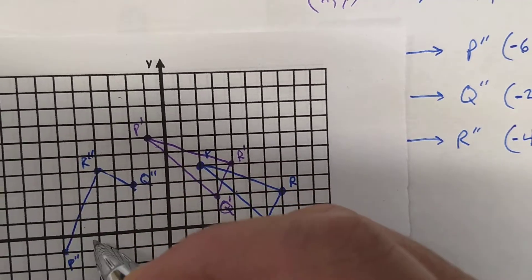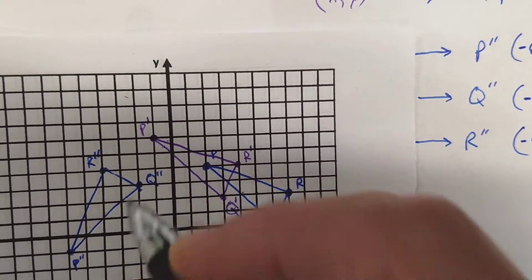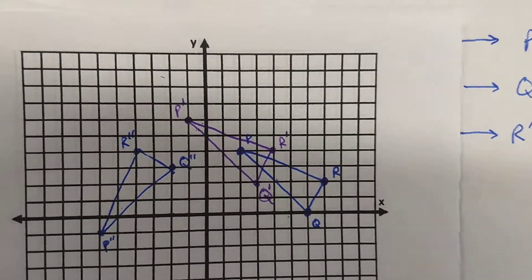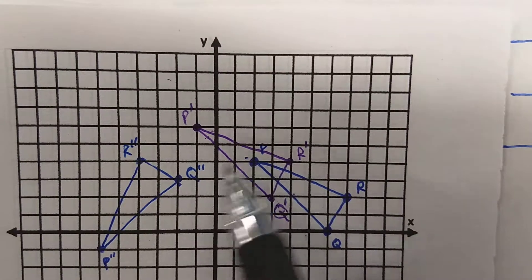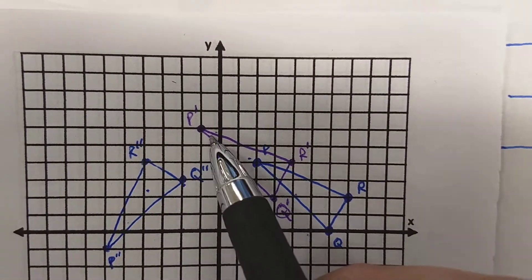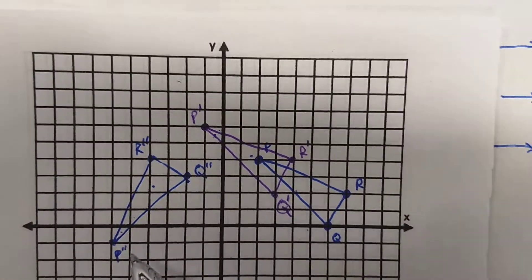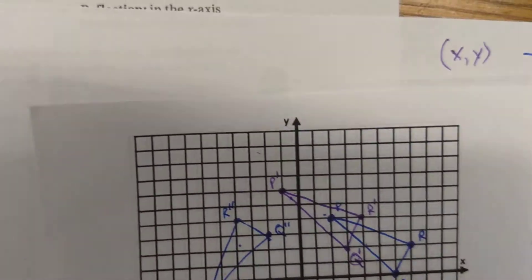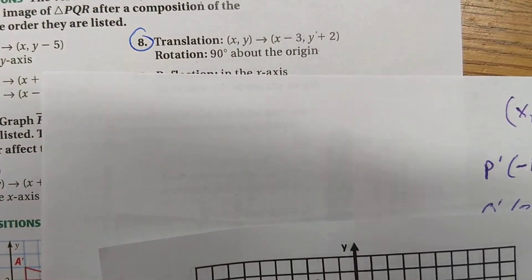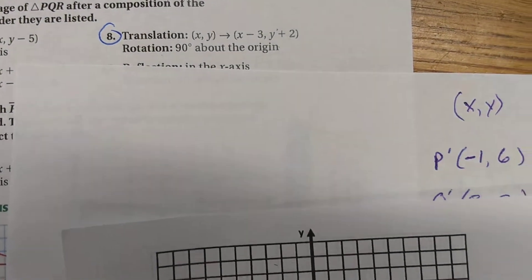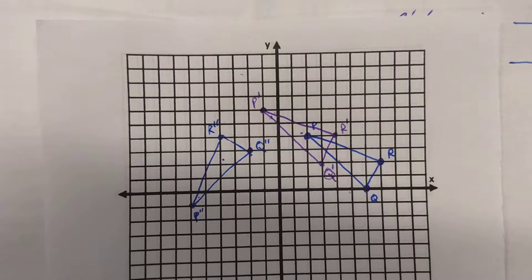And when I connect those, I see that I still have the same triangle as far as the size. It's congruent. But I've rotated it mainly in the first quadrant to the second quadrant. A little bit that was in the second quadrant is now down in the third quadrant. And we've gone through that double transformation, translating and then rotating. That's an example of a composition that we've graphed.